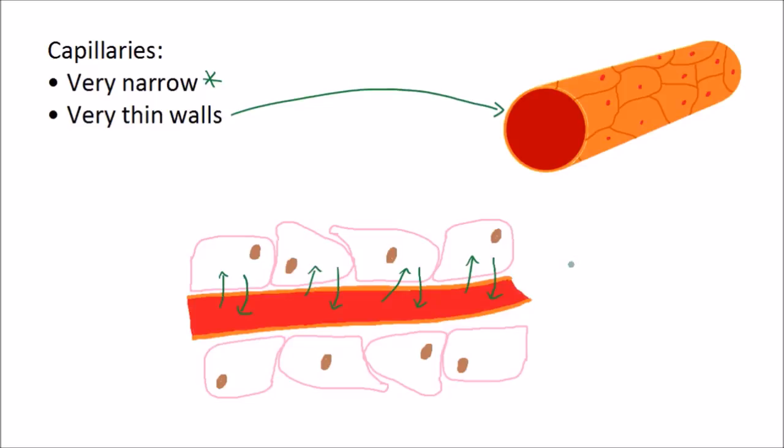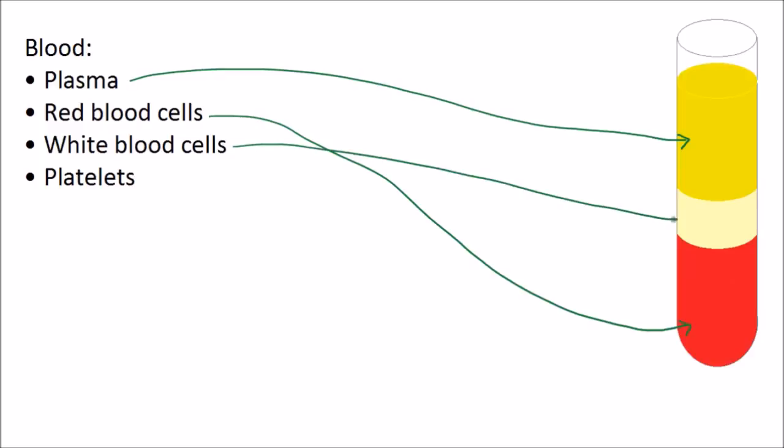So next we need to look at the blood itself, and blood is made up of the following constituents. The majority of our blood is made up of plasma, and we'll look at each of these in turn. Red blood cells, and then the white blood cells and platelets make up a very small amount of our blood. So imagine this was a test tube and you had blood and you managed to separate out all the different parts of the blood. This is roughly speaking what it would look like and how much of each thing you would have.